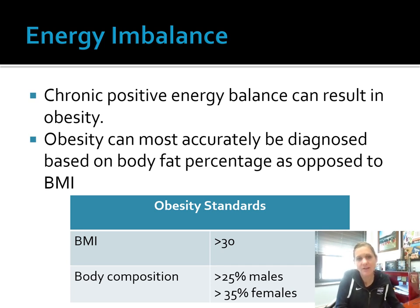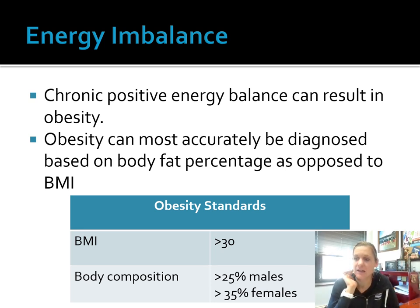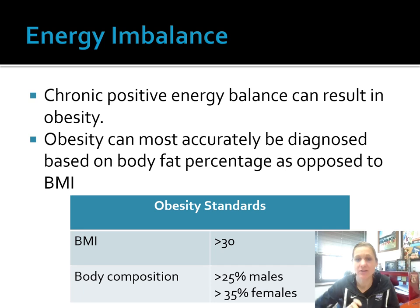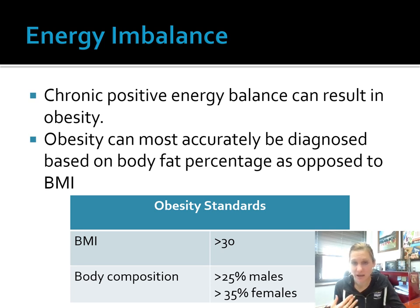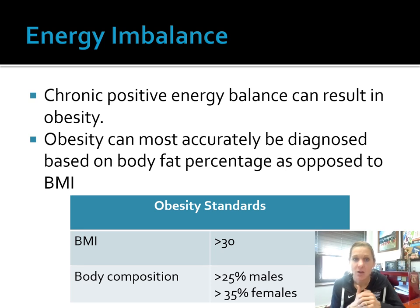When we think about energy imbalance, in order for us to lose weight, we need to create a negative calorie balance or a negative energy balance. A positive energy balance means I'm depositing more calories than I'm expending. In order to create balance, calories in and calories out need to match — that allows us to maintain weight. A negative calorie balance means I'm spending more than what I'm bringing in. Chronic positive energy balance can result in weight gain and obesity.